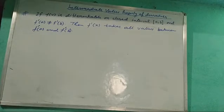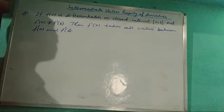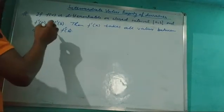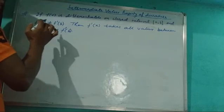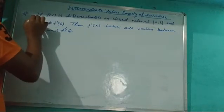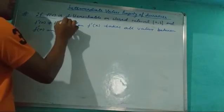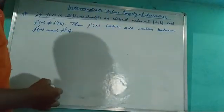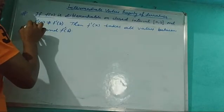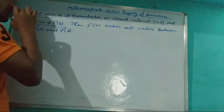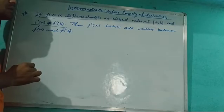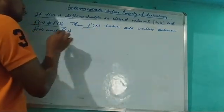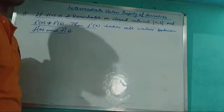The statement of intermediate value property of derivative is: this is a property of the differentiable function. If f(x) is differentiable on a closed interval [a, b] and f'(a) is not equal to f'(b), then f'(x) always takes all values between f'(a) and f'(b).